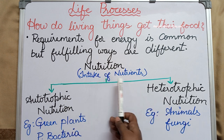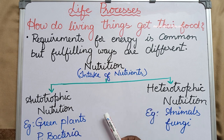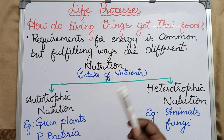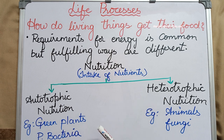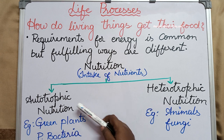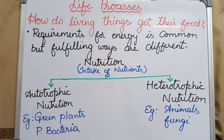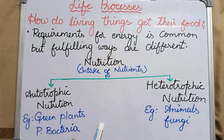In autotrophic nutrition, 'auto' means self, so these organisms prepare their own food materials. They obtain simple inorganic substances from the environment — like carbon dioxide and water — and convert them into food materials inside their body. That type of nutrition is called autotrophic nutrition, and those organisms are called autotrophs. Examples are green color plants and photosynthetic bacteria.